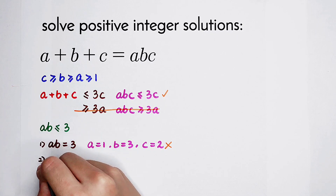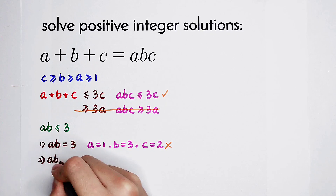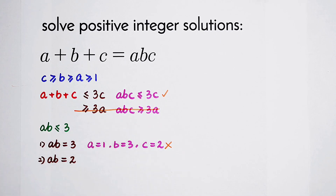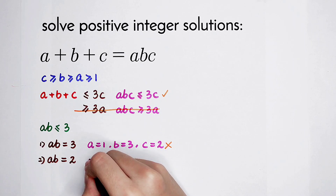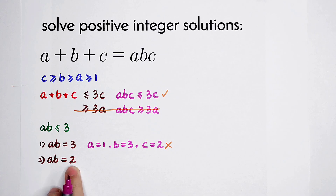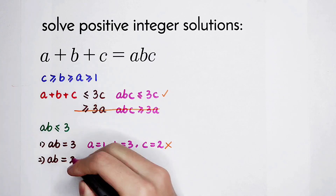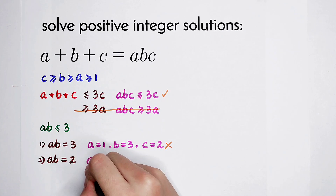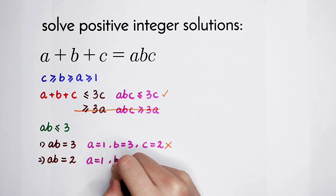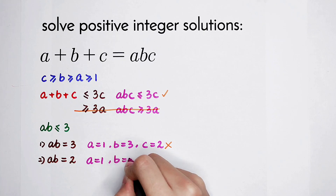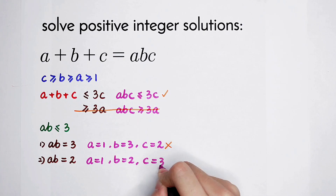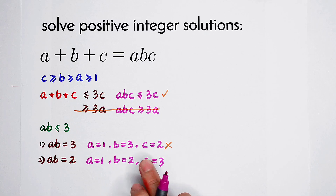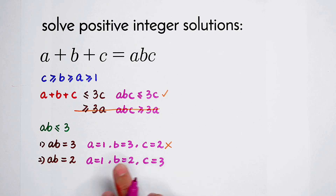The second case is AB = 2. Then 2 splits as 1 times 2, so A = 1 and B = 2. Solving for C gives C = 3. Now 3 is greater than 2, which is greater than 1 — the ordering holds. This is a valid solution.